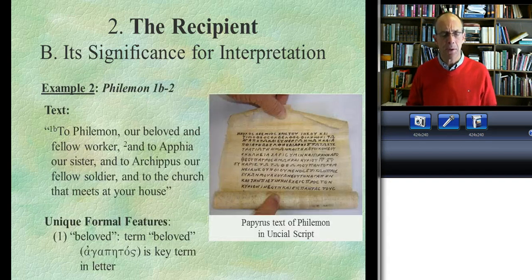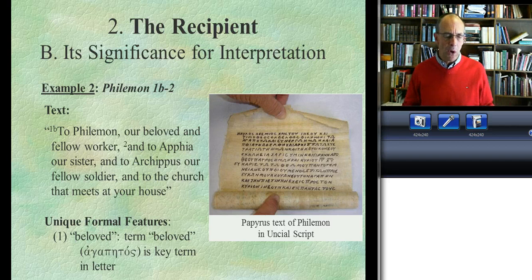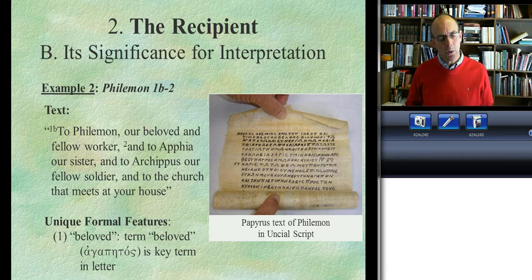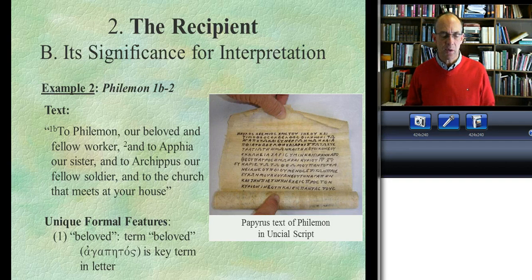Another good example to look at is the little letter to Philemon. Notice how Paul identifies the recipient in this particular document. He says: 'To Philemon, our beloved and fellow worker.' Let's just stop right there and notice that Paul calls Philemon 'our beloved.' Agapetos is the Greek word he uses.